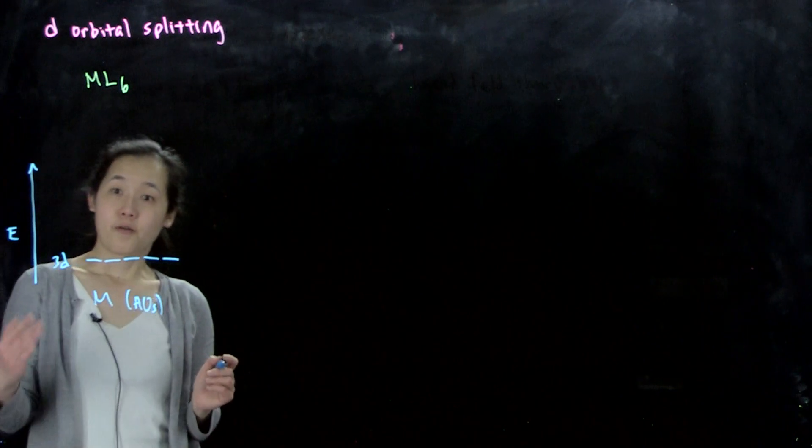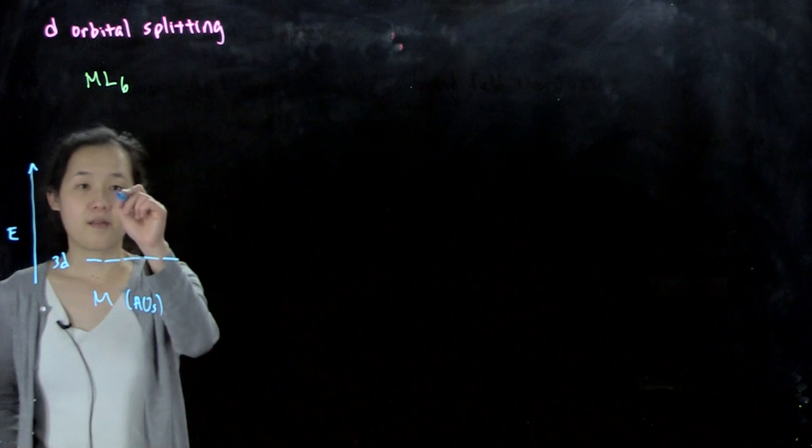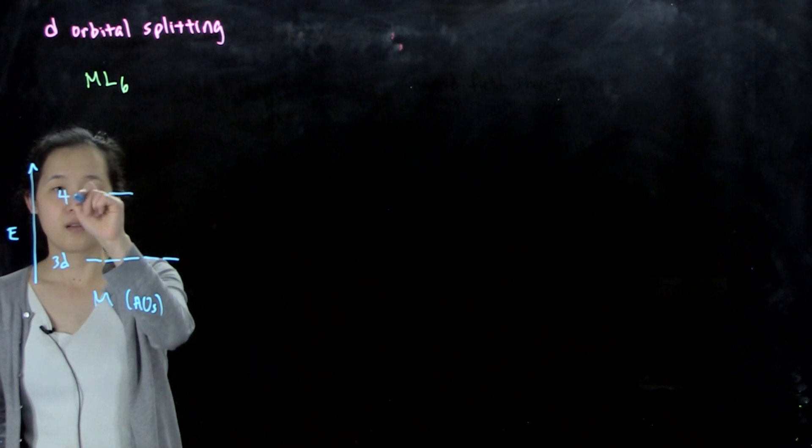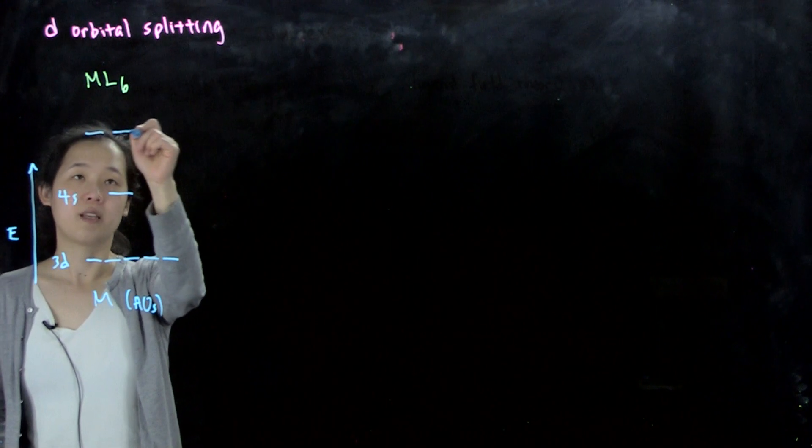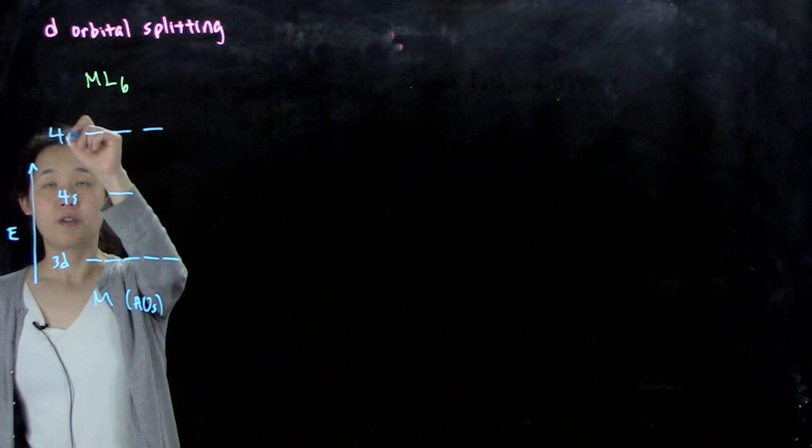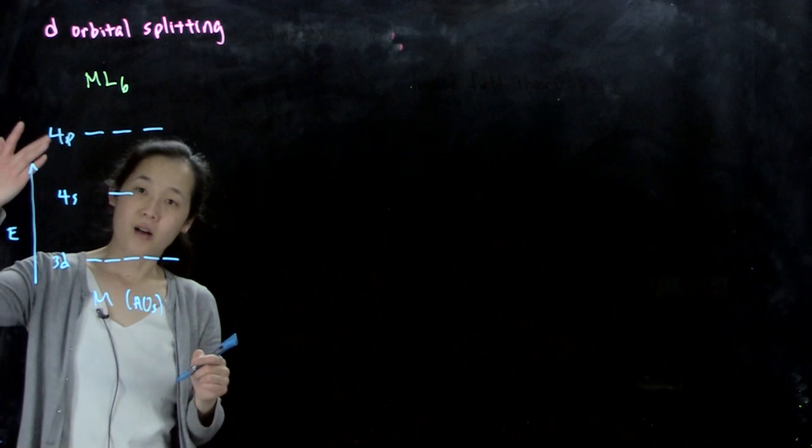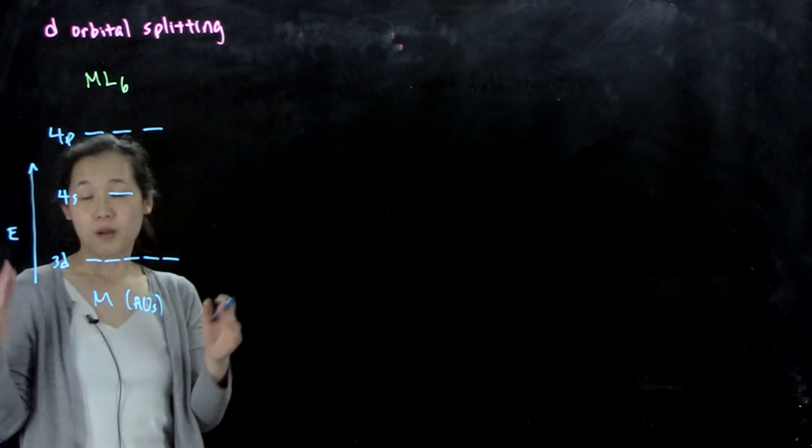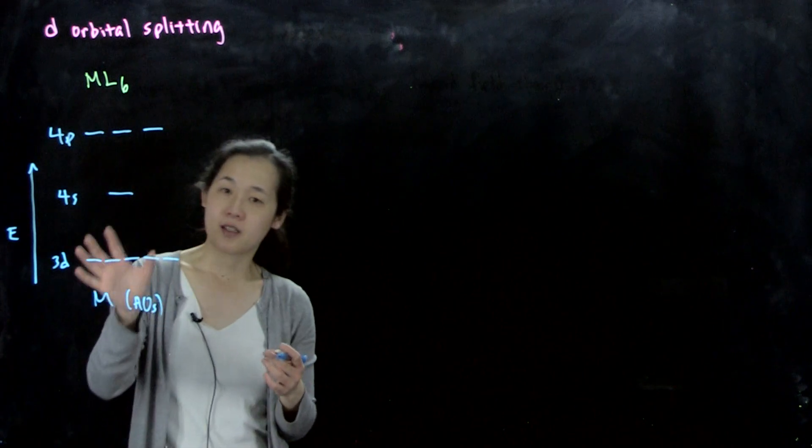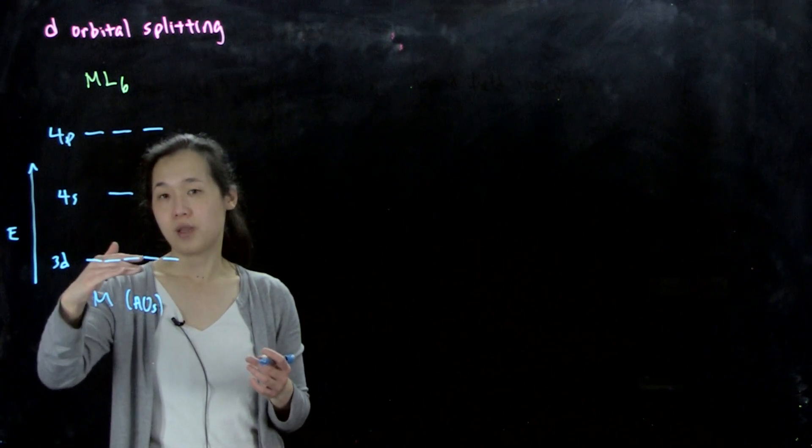The 4s turns out to be above it slightly, so then we have 4s. And then above here, we have 4p. For the transition metals, the s and the p are empty, because when we start binding our ligands to it, we consider the d orbitals lowest in energy. That's where all your electrons will be.